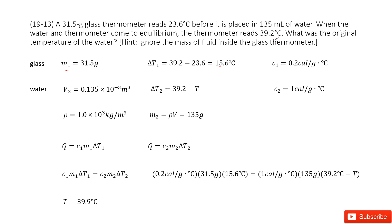Now we look at the water. The quantity given is about volume — it tells us there is 135 milliliters of water. We convert the unit to cubic meters. For water, we write the temperature change as final temperature minus initial temperature. We don't know the initial temperature of the water, so we write the letter T to represent it — the temperature change for water is 39.2 minus T.